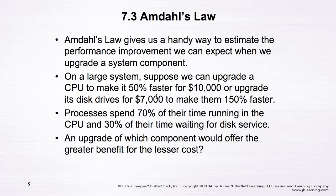We have two options with different costs and different performance improvements. To determine which option is better, we need additional information: specifically, what percentage of time the workload is spent on different components. In our case, assume the processor spends 70% of its time running on the CPU and 30% of its time waiting for disk service.